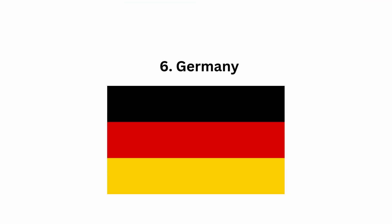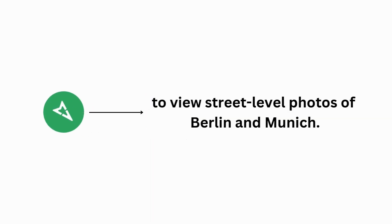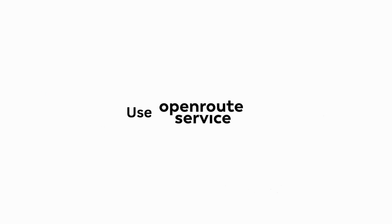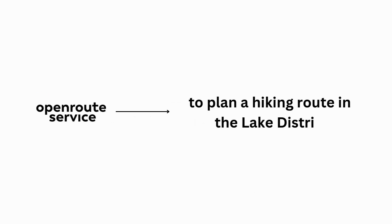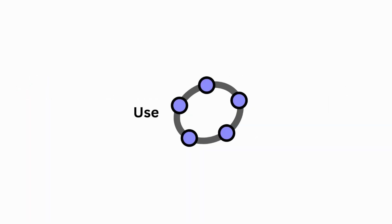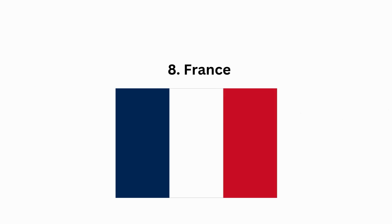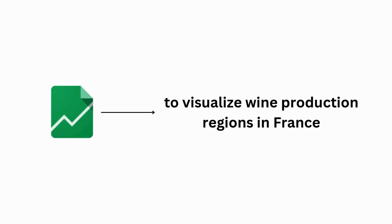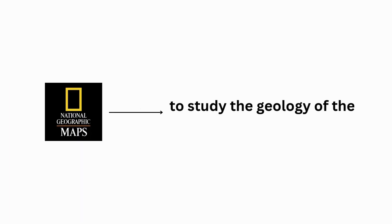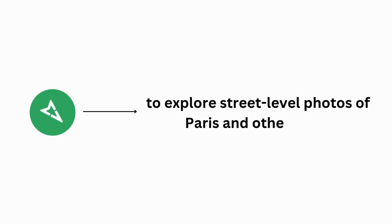For Germany, use NASA World Wind to explore the topographic features of the Rhine River. Use Mapillary to view street-level photos of Berlin and Munich. For the United Kingdom, use Open Route Service to plan a hiking route in the Lake District. Use Wikimapia to discover and annotate historical sites in London. Use GeoGebra to create interactive map visualizations related to British landmarks. For France, use Google Fusion Tables to visualize wine production regions. Use National Geographic Maps to study the geology of the French Alps. Use Mapillary to explore street-level photos of Paris and other cities.